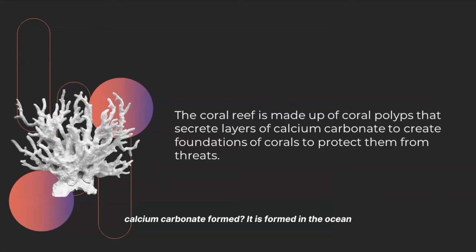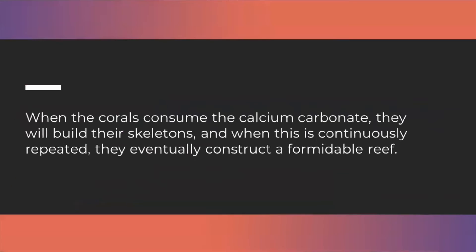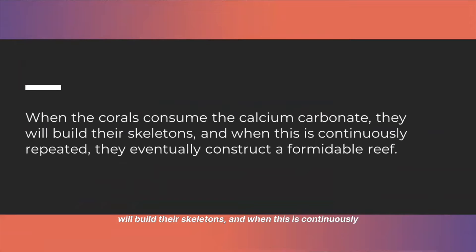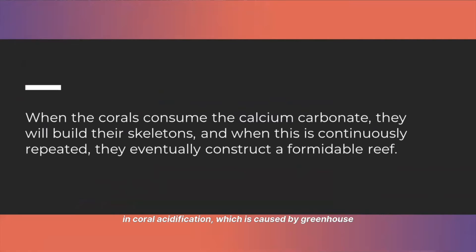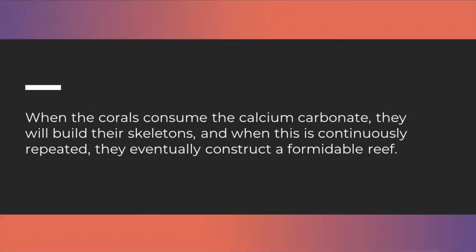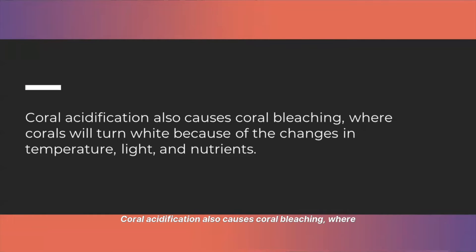Calcium carbonate is formed in the ocean when carbon dioxide combines with calcium. When the corals consume the calcium carbonate, they will build their skeletons, and when this is continuously repeated, they eventually construct a formidable reef. However, when corals are disrupted, it could result in coral acidification, which is caused by greenhouse gas emissions that make it harder for coral reefs to further develop their skeletons. Coral acidification also causes coral bleaching, where corals will turn white because of the changes in temperature, light, and nutrients.